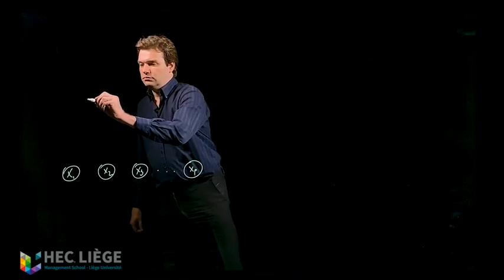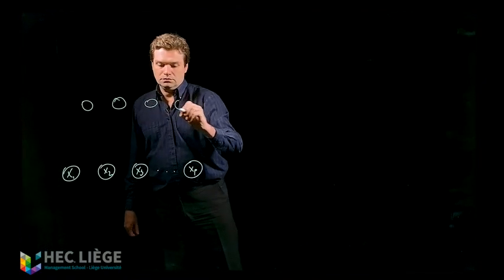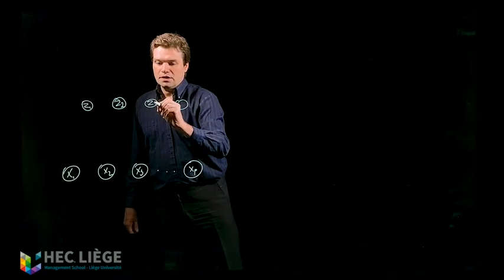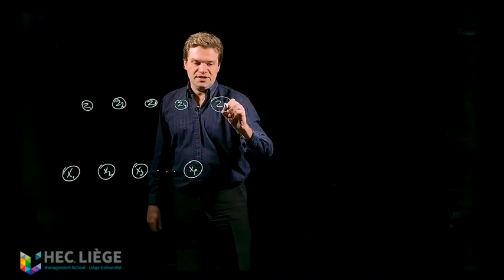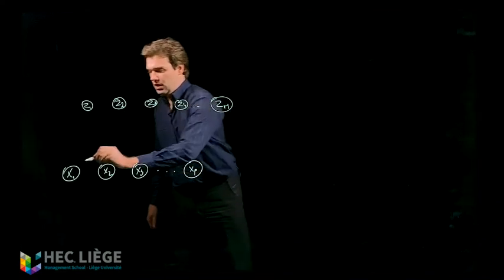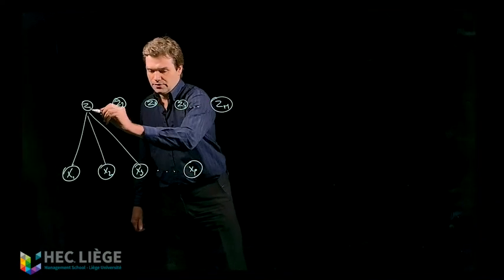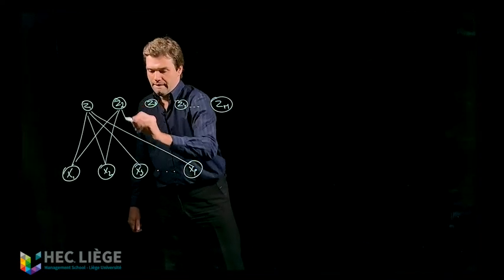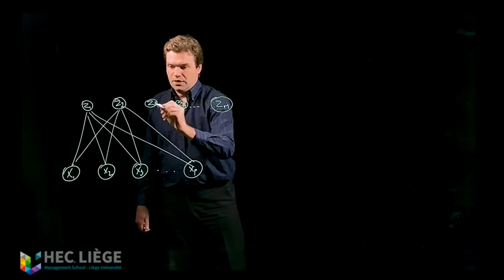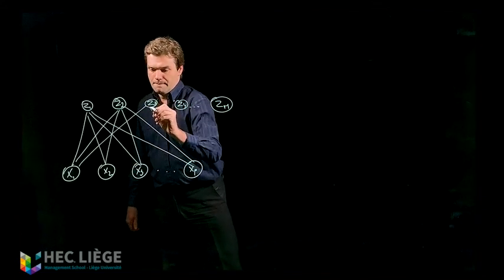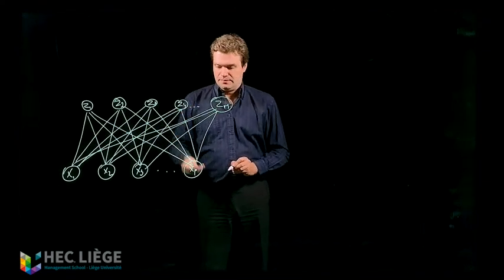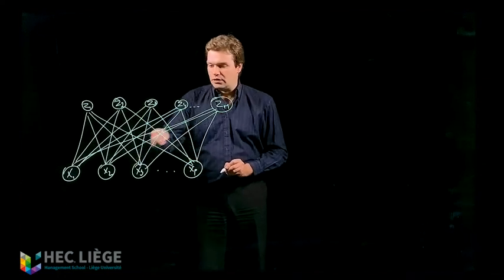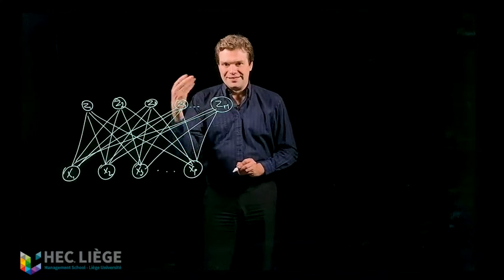And you have here other neurons that we name z1, z2, z3, z4, and you can go up to zm. You have connections between these neurons, and these connections can be seen as synapses. That means the different neurons are going to correspond together through these connections, through these synapses.